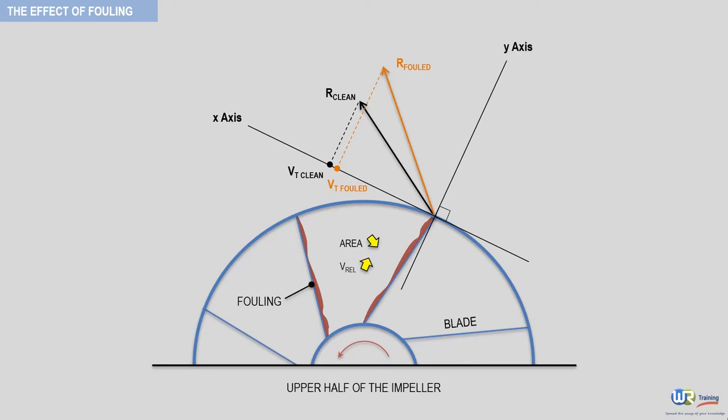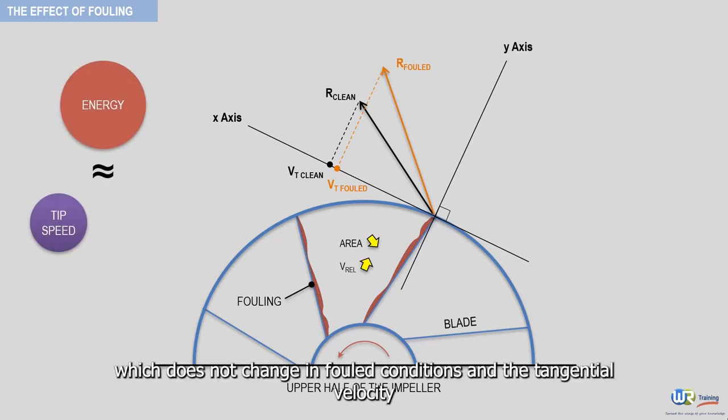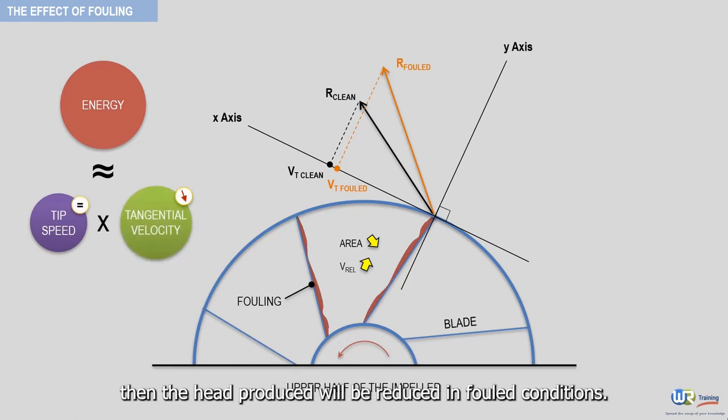Now since the head produced by the impeller is the product of the impeller tip speed, which does not change in fouled conditions, and the tangential velocity, which is reduced, then the head produced will be reduced in fouled conditions.